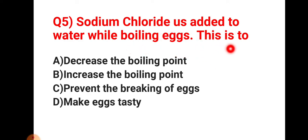Question number five: sodium chloride is added to water while boiling an egg. This is to increase the boiling point of water, which is option choice B. Think about what advantage we can get by increasing the boiling point of water — do some brainstorming for this part.